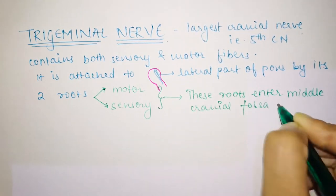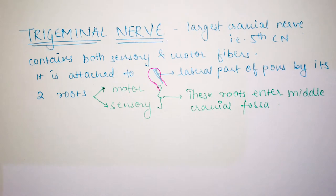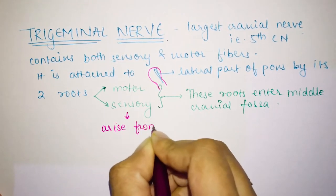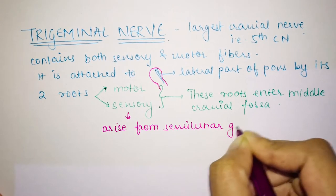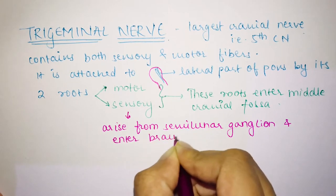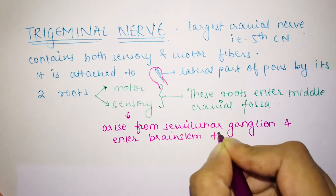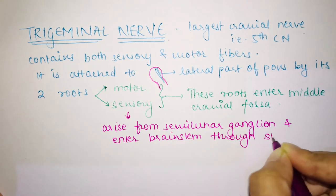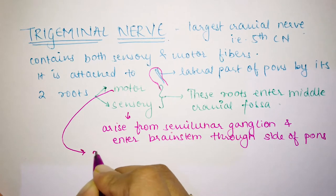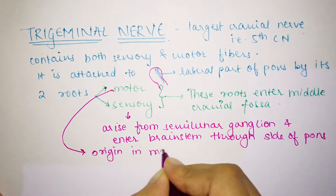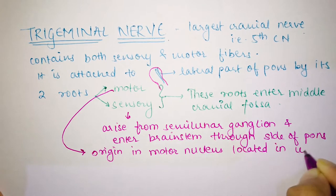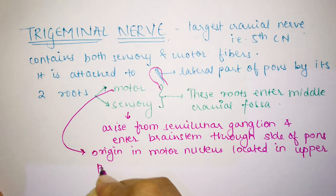These roots enter the middle cranial fossa. The sensory root arises from the semilunar ganglion and enters the brainstem through the side of the pons. The motor root originates in the motor nucleus, which is located in the upper area of the pons.